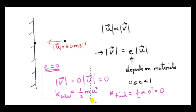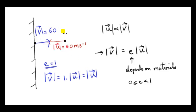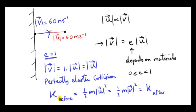The other extreme is where e is equal to one. In that case, v equals one times the initial speed, so the final speed equals the initial speed. In reality this never happens, because a certain amount of the particle's energy always gets transferred to the wall — molecules in the wall vibrate and the particle is deformed. But if e were equal to one, we would have what is called a perfectly elastic collision: no loss of kinetic energy.